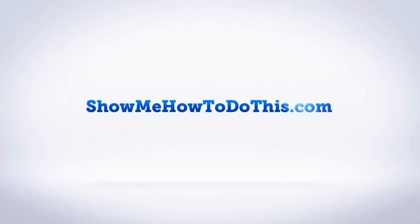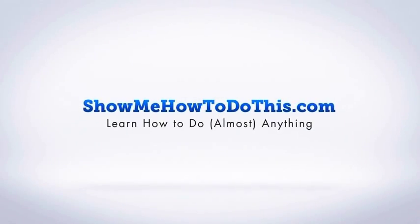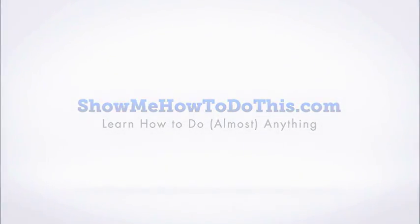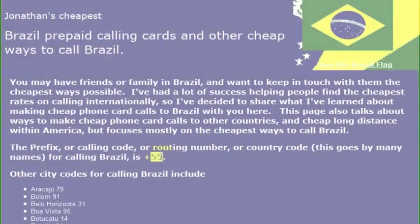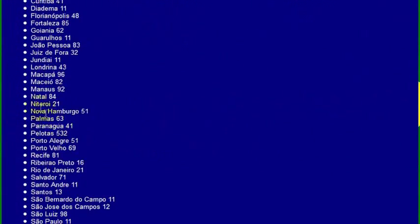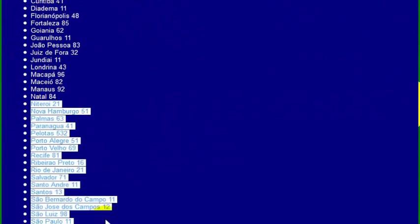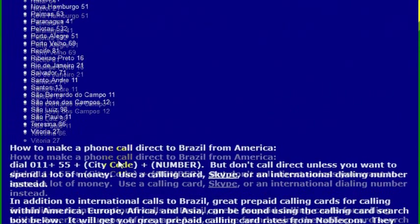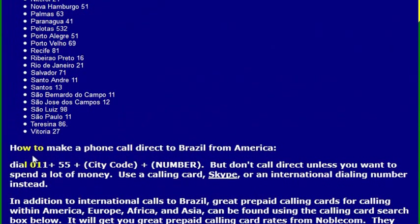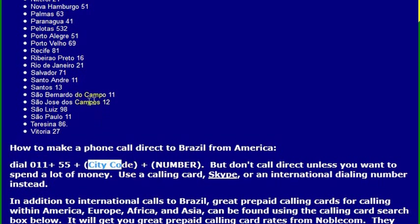To call friends or family in Brazil, all you need to do is know the country code for Brazil, which is 55. Here's a list of a whole bunch of cities and their city codes in Brazil. From any internationally enabled phone in the United States, you would simply pick up the phone and dial 011, then 55, then the city code for whatever city you're calling, and the number.